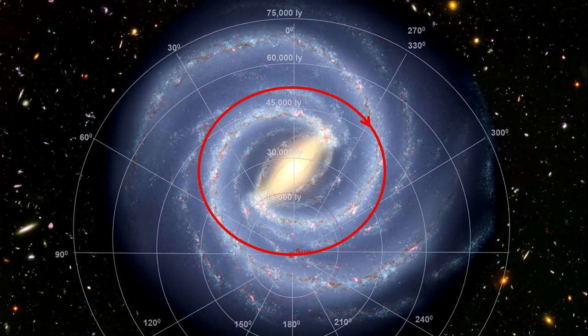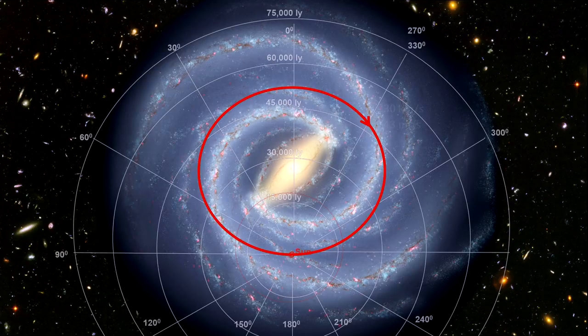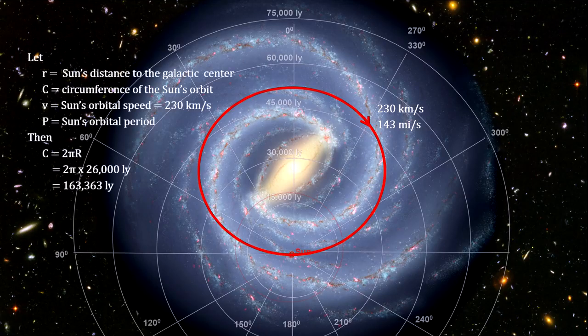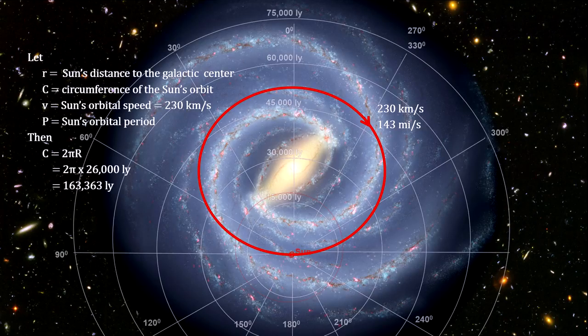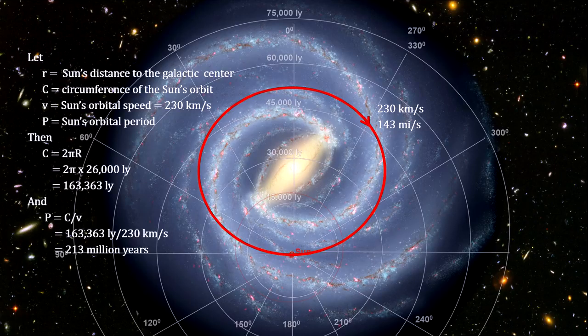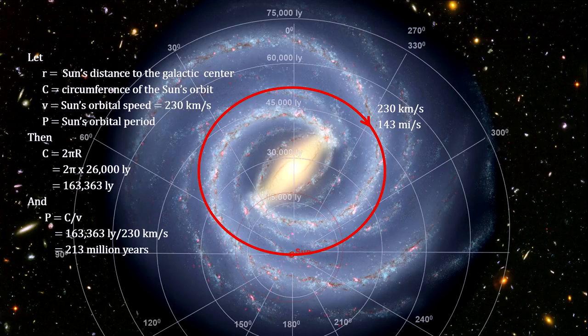Here we see the Sun's orbit around the galactic center. Our orbital speed is approximately 230 kilometers per second, or 143 miles per second. That's fast, but it takes us around 213 million years to complete one orbit around the galactic center. The last time we were in the same place in our orbit, dinosaurs were just starting to appear on the Earth. And we have traveled around one ten-thousandth of a revolution since the origin of humans.